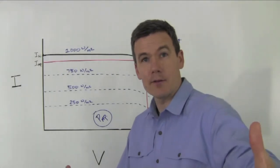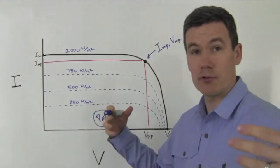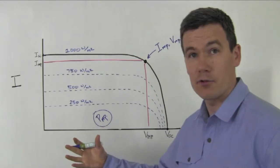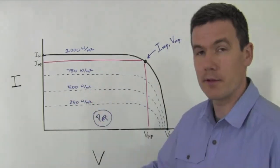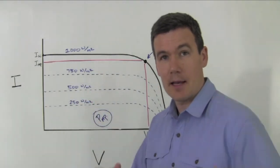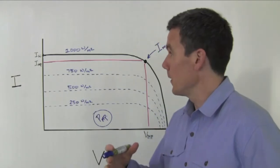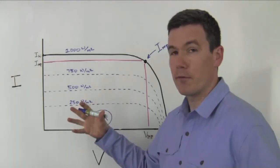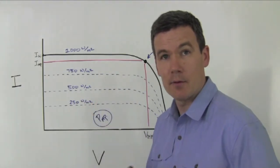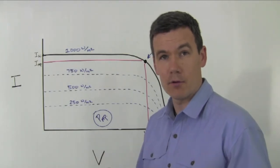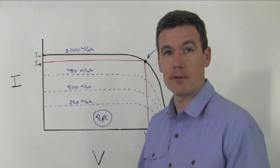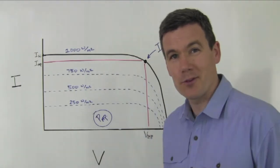These are the basics of an IV curve for a solar module, a string of solar modules, or an entire solar array. The basics are all the same. And this is the absolute fundamental curve that we try to protect, preserve, and harvest for a solar array in a solar electric system. Thanks for tuning in. We'll see you next time.